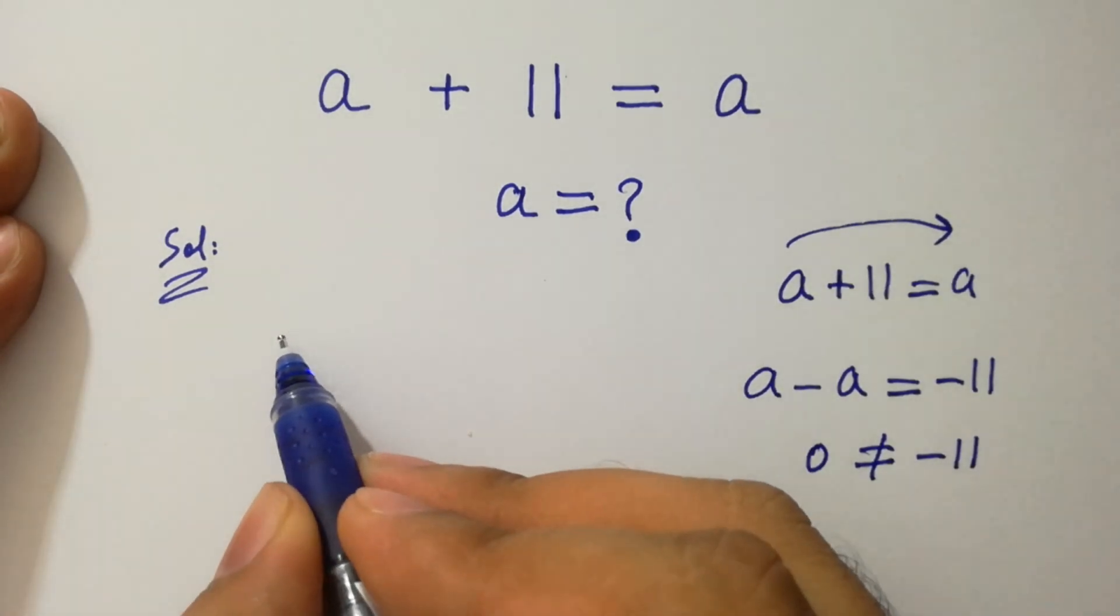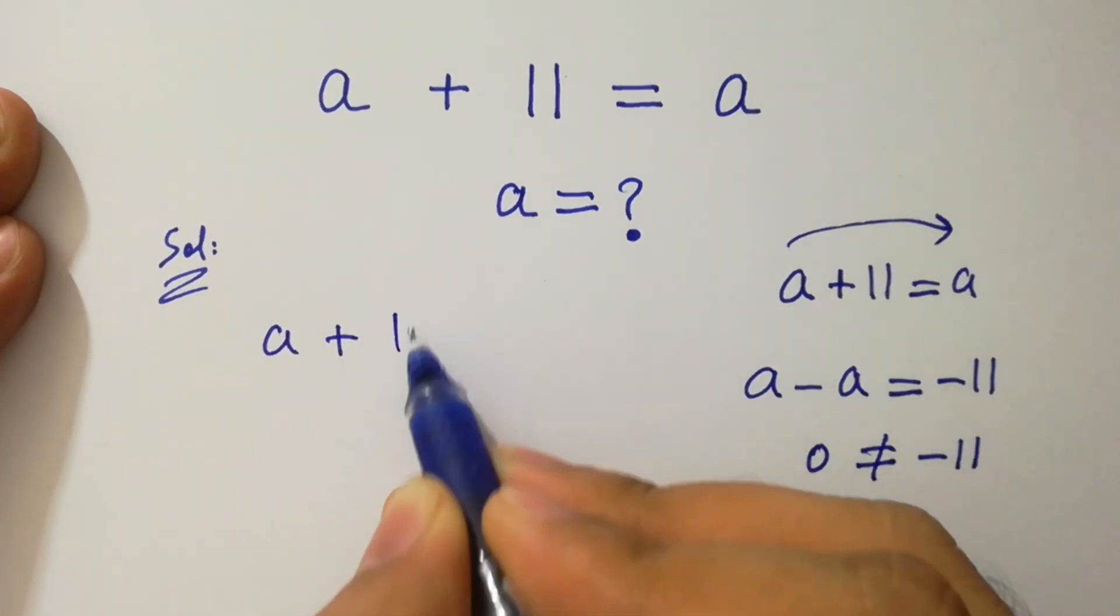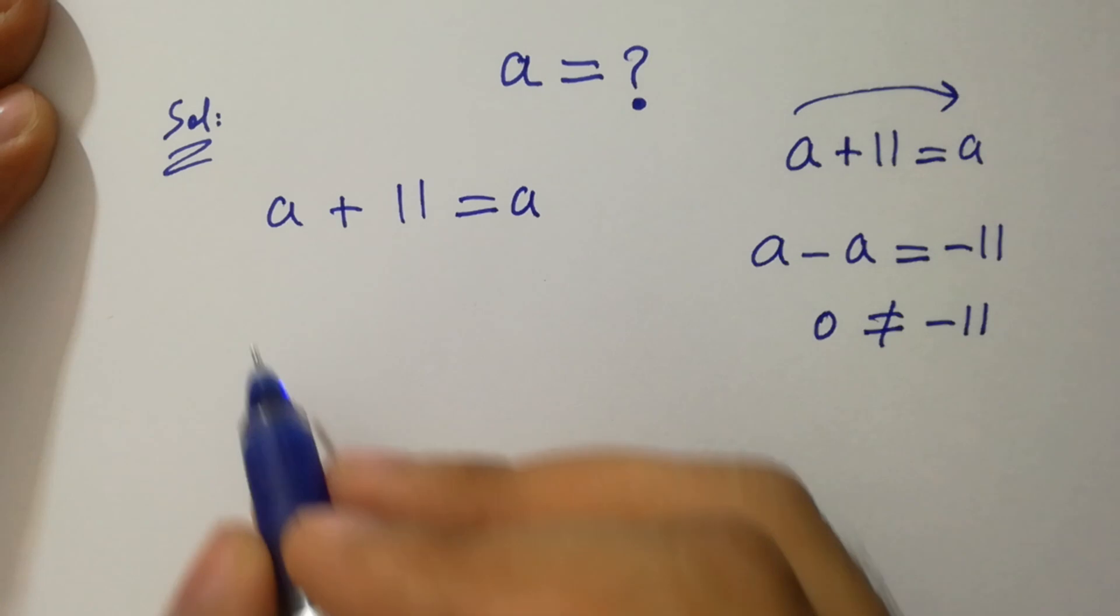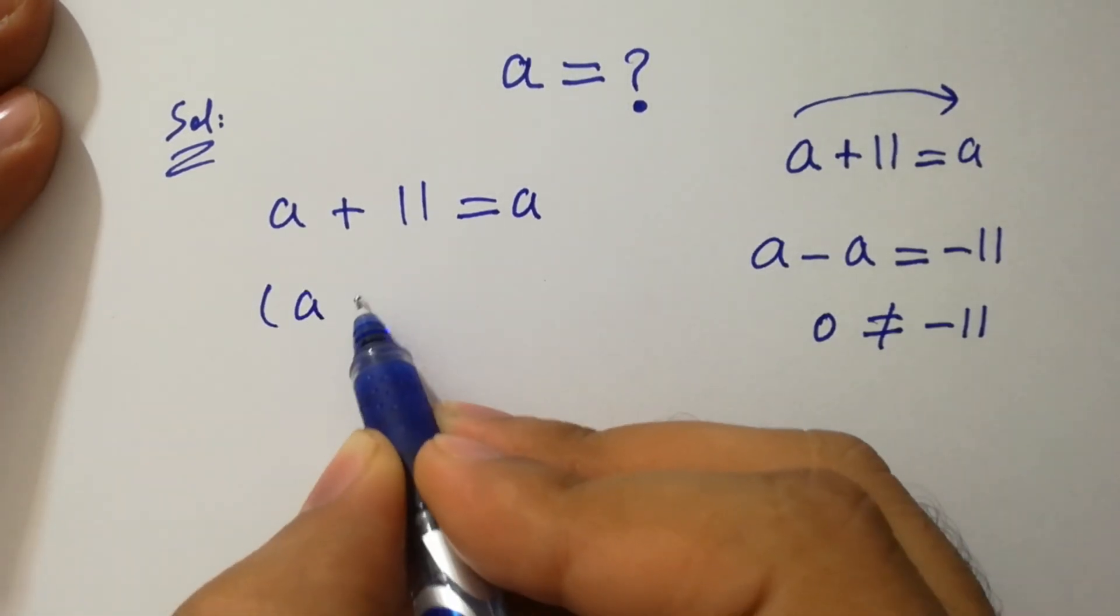We have a question here, a plus 11 equal to a. To solve this, take square on both sides.